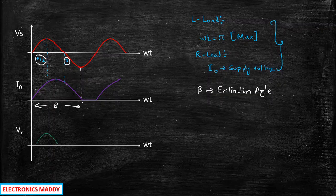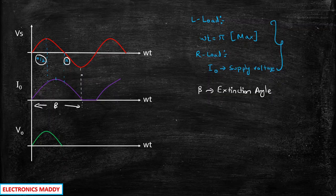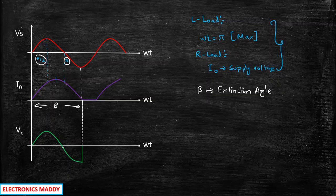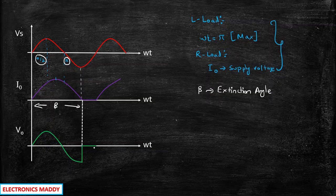What happens to the output voltage? The output voltage during the positive half cycle will follow the supply — whatever is being supplied will appear across the load terminals. During the negative half cycle, the current was still flowing till some point, so the diode was still conducting and the output voltage will still keep following up to some point. Once the current decays to zero at omega t equal to beta, the voltage will become equal to zero because the diode is open circuited. Then it will be zero again until the next positive half cycle, where the voltage will again follow the supply voltage waveform.